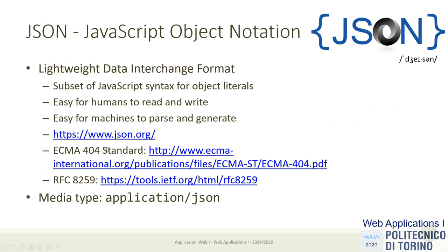JSON is written like 'JSON' but read like 'Jason' — the name of a person. It is a very simple data format inspired by the object notation in JavaScript. Since the first lecture we know how to create objects in JavaScript with braces and attributes and values. JSON draws from that and adapts and simplifies the JavaScript syntax, defining a very simple text format by which it's also possible to generate complex objects.